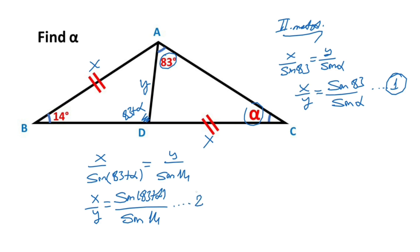If we equalize these two equations, sine 83 over sine alpha must be equal sine 83 plus alpha over sine 14. Now you can see easily alpha equal 14 degrees.